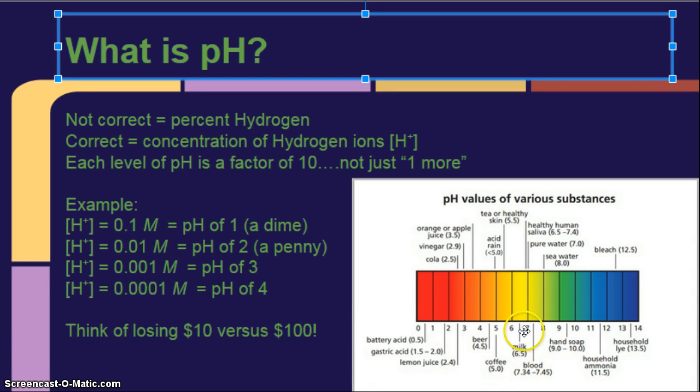So remember, having a pH of 7 versus 8, 8 is 10 times more basic than 7. 9 is 100 times more basic than 7. 10 would be how many times more basic than 7? 10, 100, 1,000. So it's kind of like the difference between losing a $10 bill and a $100 bill.